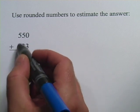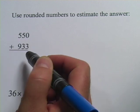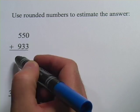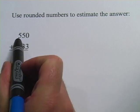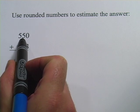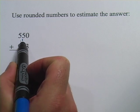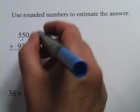What we want to do, since we have hundreds here, 550 and 933, we want to round each of those to the nearest hundred. To round this 550 to the nearest hundred, we look at the next digit over. If it's a 5 or above, we round up to the next hundred, so that's going to be 600.